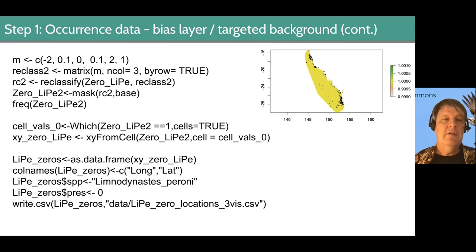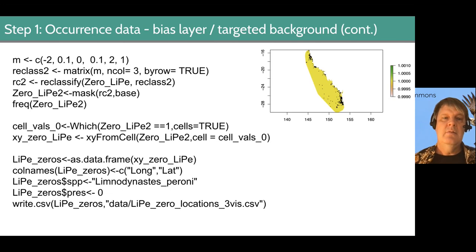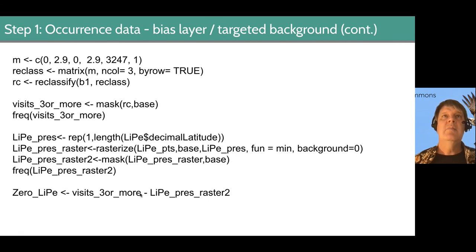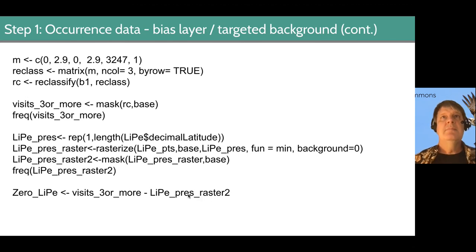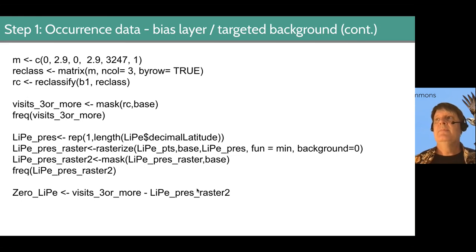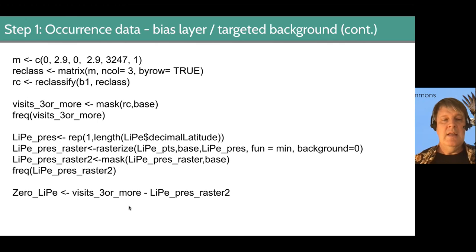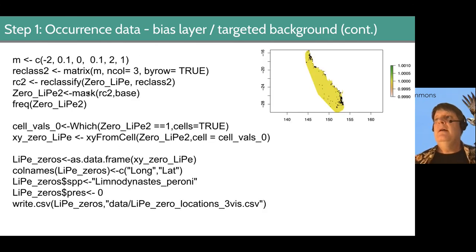The visits3ormore raster is where any frog was observed in our study area. The LIPPresence2 raster is where our target species was observed. Here we're subtracting all the places where our target species was observed from all the places where any frog was observed. When we look at the frequency of that layer, we get some negative one values. The reason is sometimes there were places where the only frog observed was our target species — and when we subtract that, we get a few negative values.